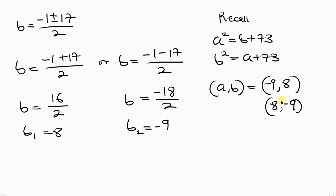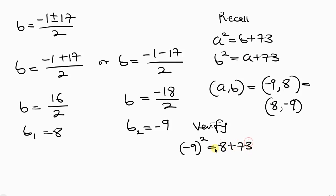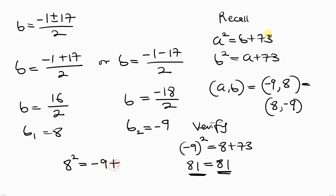Let's verify. Testing with a equals negative 9 and b equals 8: negative 9 squared equals 81, and 8 plus 73 also equals 81 — correct. Testing with a equals 8 and b equals negative 9: 8 squared equals 64, and negative 9 plus 73 also equals 64 — correct. Both solutions check out.